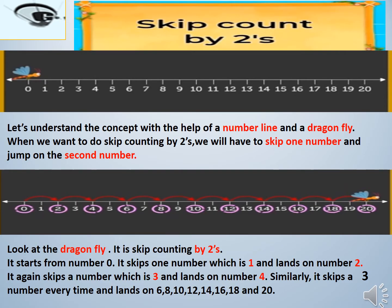Let's understand the concept of counting by twos with the help of a number line and a dragonfly. Here you can see a number line starting from zero to twenty, and a dragonfly sitting on zero. The dragonfly is getting late and wants to reach twenty faster. When we do skip counting by twos, we skip one number and jump on the second number.